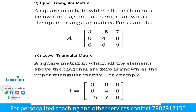A lower triangular matrix is a square matrix in which all the elements above the principal diagonal are zero. This is known as a lower triangular matrix, and it covers the main elements of the principal diagonal.